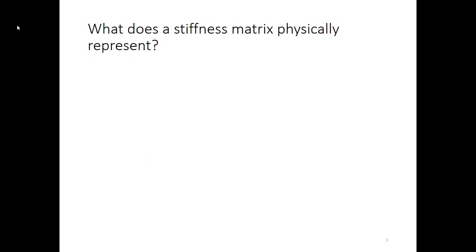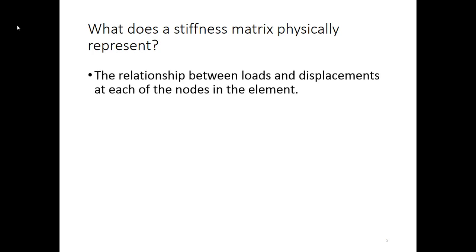So what is this mass matrix and this C or damping matrix? Well, to understand what those are, we really need to go back and talk about what the stiffness matrix really is. We've derived this thing, but what does it physically mean? It represents the relationship between the loads and displacements at each of the nodes in the element. And that's sort of the terminology that we've been using in all of these videos, but I don't think that really gets at physically what's going on.